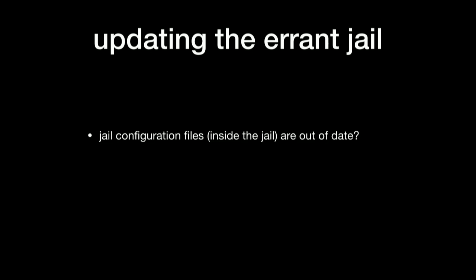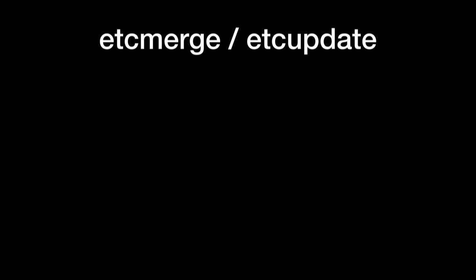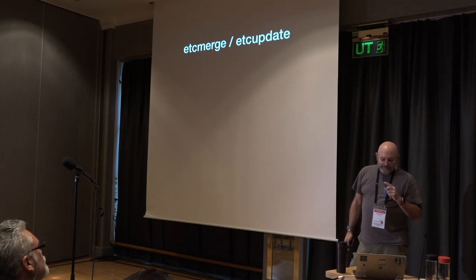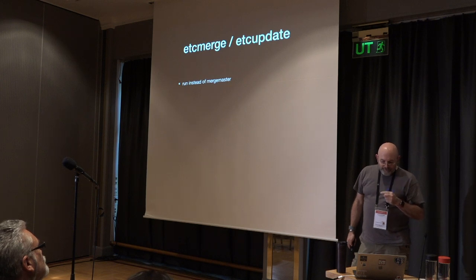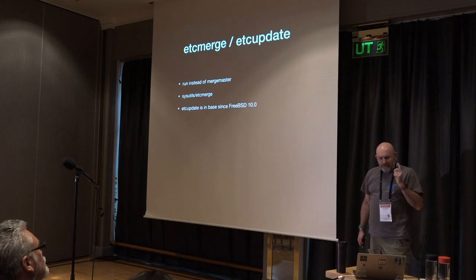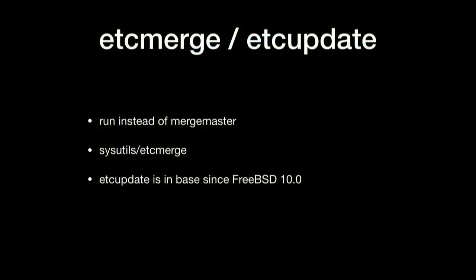My configuration files were out of date, so I had to run mergemaster by nullfs-mounting /usr/src and /usr/obj and then doing the merge. But instead of mergemaster, I recently found out about etcmerge and etcupdate — I'm not sure they're useful for this specific situation, but I wanted to mention them. etcmerge is from the port sysutils/etcmerge, and etcupdate has been in base since FreeBSD 10. They both do three-way automatic merges, which means none of the manual mergemaster Q-M-1-2 decisions — it does almost all of that automatically for you.